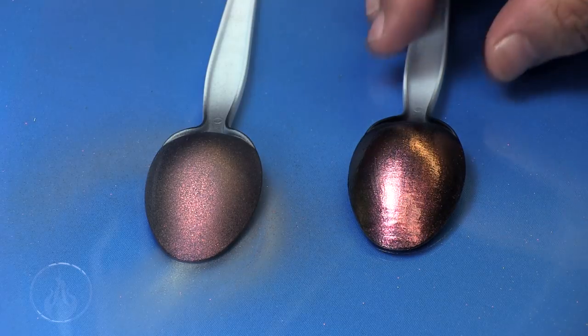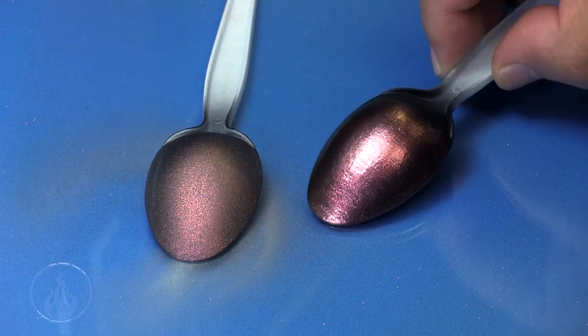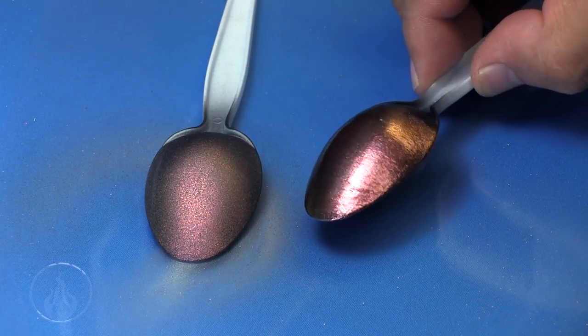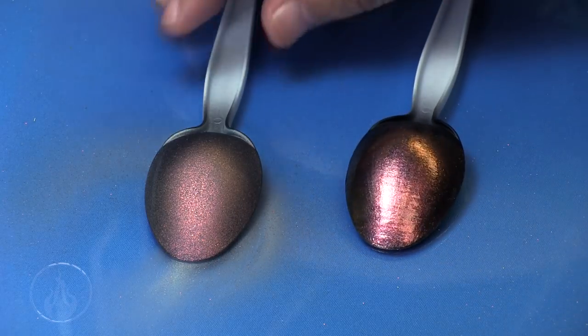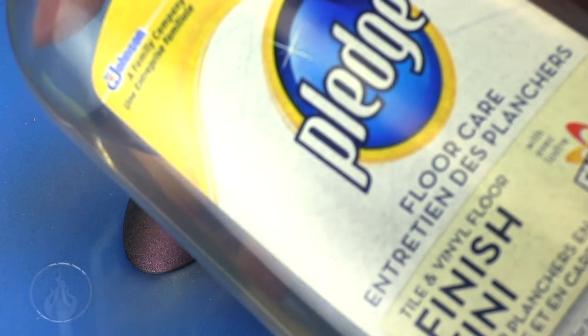You can see on the spoon here, now I've laid out three coats - that is three coats of the nail polish onto that surface to get that really luster. Right now it's only two coats with the airbrush before.